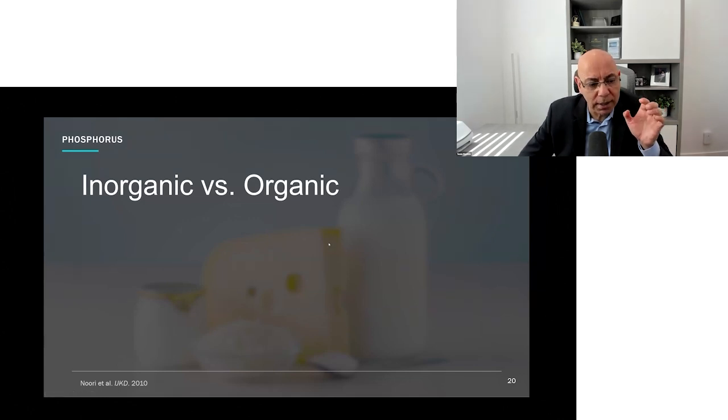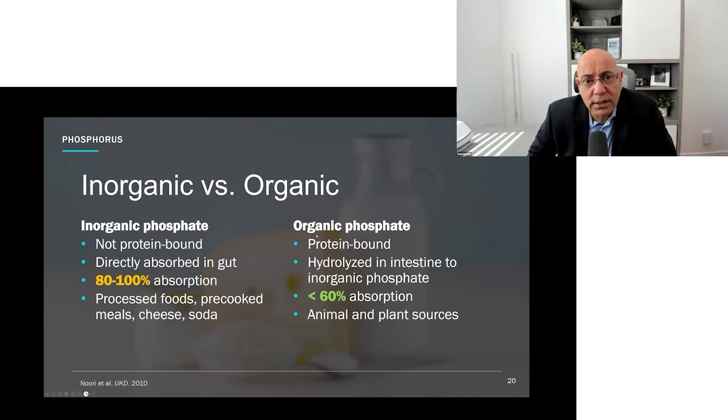When we get into plant-based diets, the reason this is so powerful is because not all phosphorus is created equal. When we talk about phosphorus, we talk about inorganic and organic. Specifically, inorganic phosphate has almost 100 percent absorption. The take-home is inorganic is really all your processed foods and sodas. But when you start to look at organic phosphate, it has significantly less absorption—specifically less than 60 percent. That's the not processed sources, the animal and plant sources of phosphorus. The message is very simple: get rid of processed foods. The less processed foods you eat, the healthier you're gonna be.